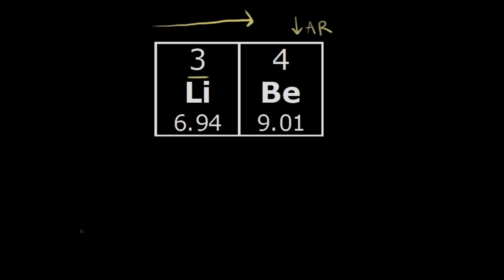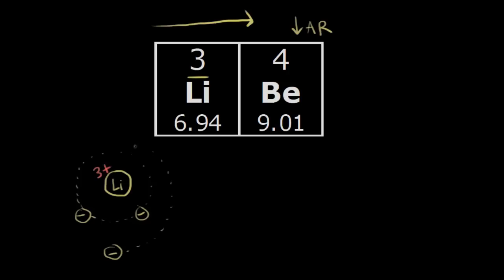Lithium has an atomic number of three, so there are three protons in the nucleus — a charge of 3+ for the nucleus of lithium. We have to account for three electrons: two of those electrons are in an inner shell, and then one electron is in an outer shell. Now let's think about what's going to happen to that outer electron as a result of where it is.